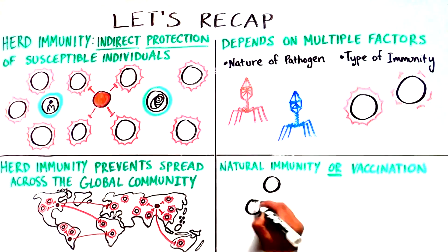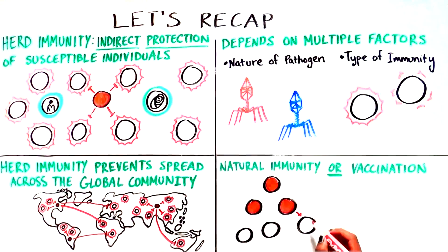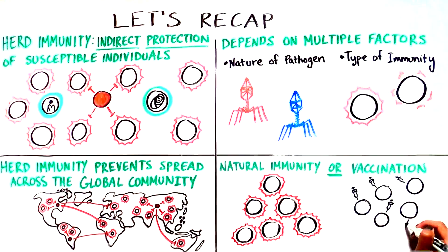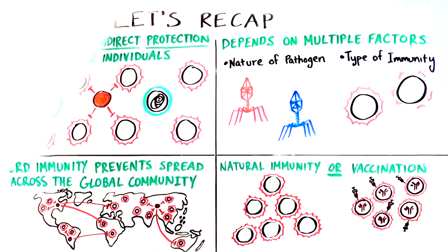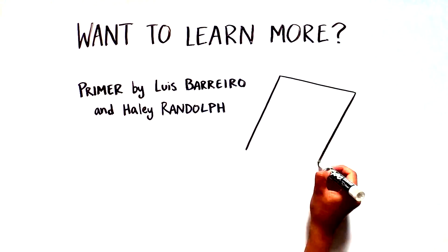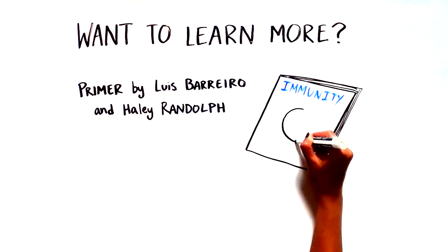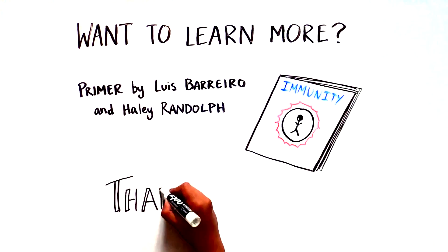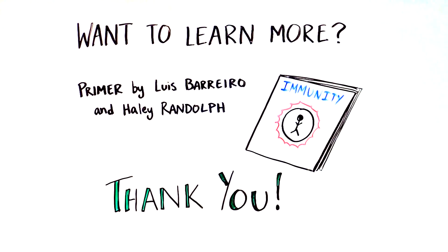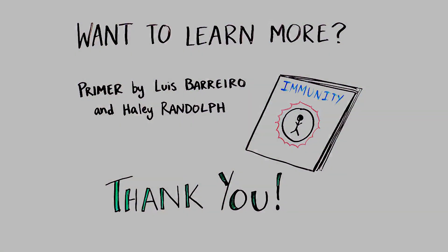For some pathogens, the herd immunity threshold can be gradually established via natural infection. But for most, effective vaccinations are critical to reach the numbers necessary to achieve herd immunity. You can learn more about herd immunity in the primer by Luis Pereiro and Hayley Randolph in the journal Immunity. Thank you for joining us today. We are Eureka Science, and this is a collaboration with Cell Press.